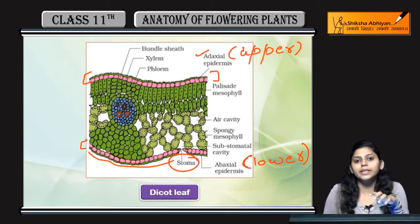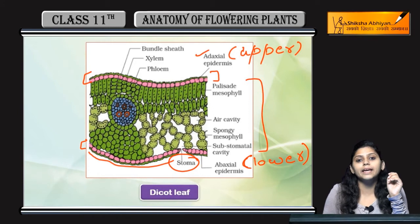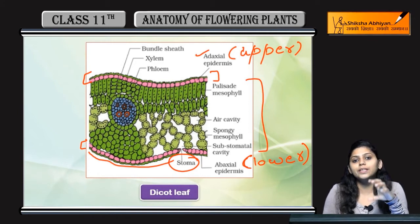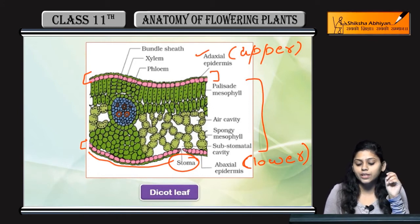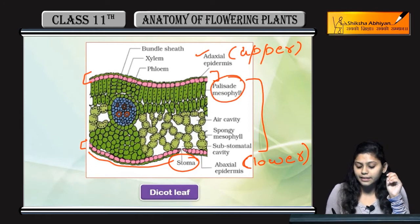Adaxial और abaxial epidermis के बीच में parenchyma cells होंगे। ये जो parenchyma cells हैं, ये दो तरह के होंगे — palisade mesophyll and spongy mesophyll.